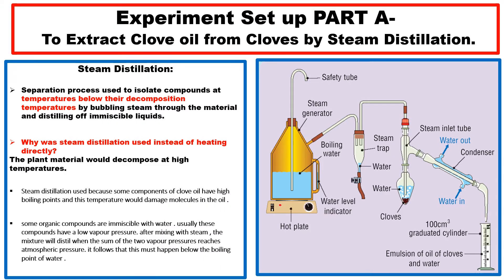Why is steam distillation used instead of heating directly? Because the plant material would decompose at a high temperature. Steam distillation is used because some components of clove oil have high boiling points and this temperature would damage the molecules in the oil. Some organic compounds are immiscible with water and have a low vapor pressure; after mixing with steam, the mixture will distill when the sum of the two vapor pressures reaches atmospheric pressure.